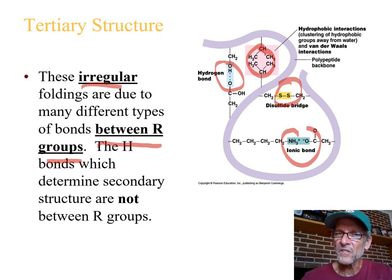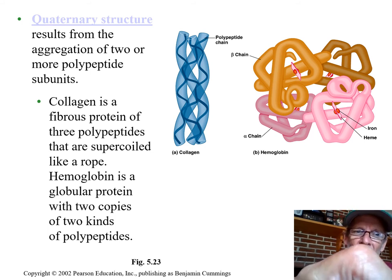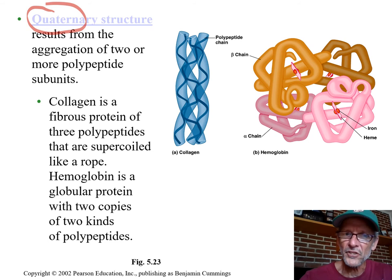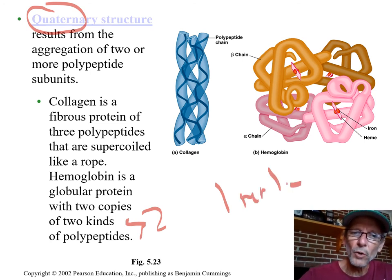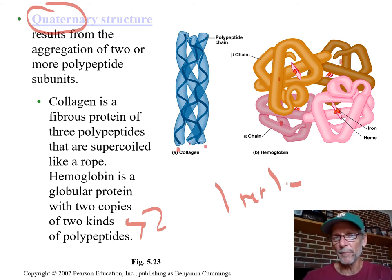Here we have the idea of what we humans have called quaternary structure. It has really nothing to do with four — it's just the fourth level of structure in our minds — and that means you have at least two polypeptide chains combined to make one protein molecule. Here we have one, two, three — here we have one, two, three, four. This is what makes a protein organized at the quaternary level.